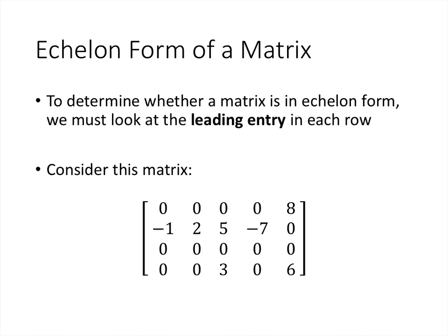Before we can get to the definition of echelon form, we need to define some terminology. To figure out whether a matrix is in echelon form, we have to look at the leading entry of each row. The leading entry of a row is simply the first non-zero entry as we go from left to right. In this first row, the leading entry is the 8. In the second row, the leading entry is negative 1. The third row doesn't have any non-zero entries, so it doesn't have a leading entry. And in the fourth row, the leading entry is 3.